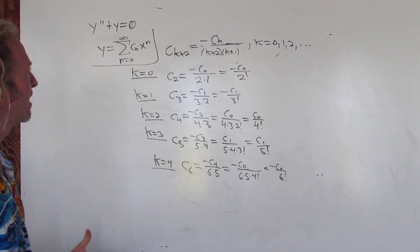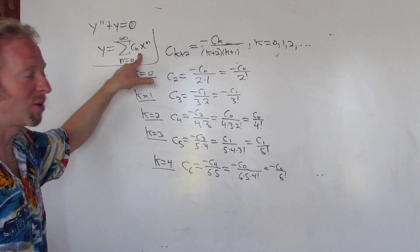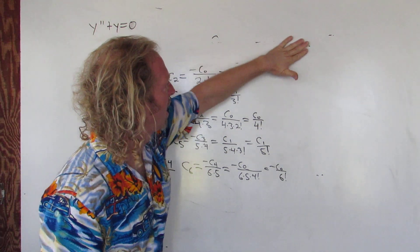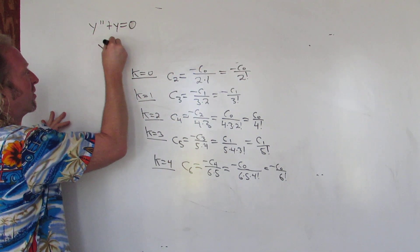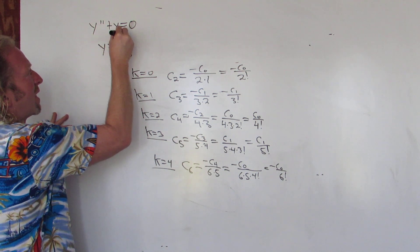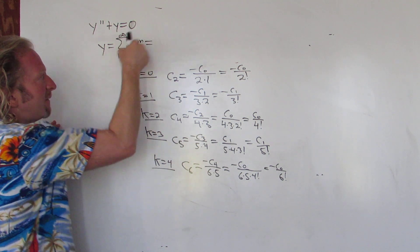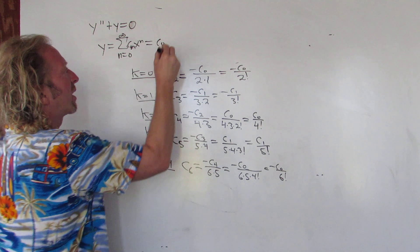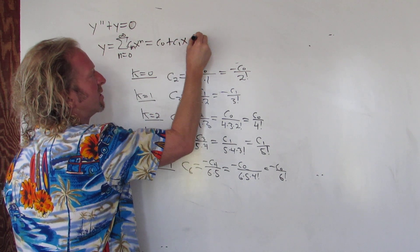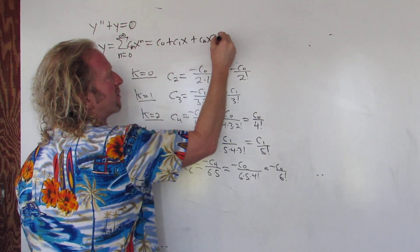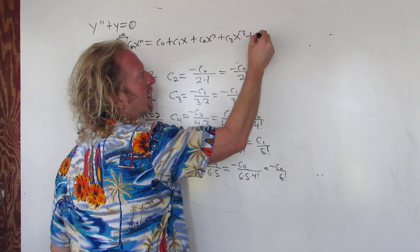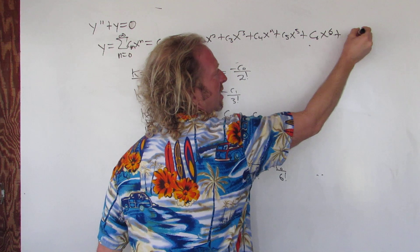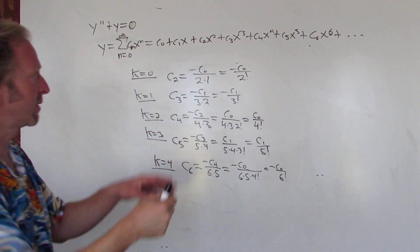Now we have these coefficients, so let's write down the answer using y equals the infinite sum. If you plug in the terms: c sub 0 times x to the 0 is c sub 0, then c1x, c2x squared, c3x cubed, c4x to the 4, c5x to the 5, c6x to the 6, plus dot dot dot — it goes on forever, so it's important to have those dots.